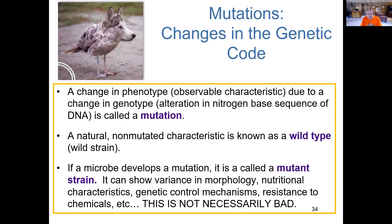Genetically inherited disorders can be thought of as a result of mutations that were in turn passed on to the individual. That could be a person, a cow, a horse, an animal, a plant, or even a bacterium or microorganism. Something considered a mutant strain will have a significant difference from the normal or non-mutated wild-type characteristic.